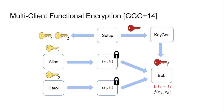A notion that prevents this leakage is multi-client functional encryption. In multi-client functional encryption, Alice and Carol use encryption labels for every ciphertext they generate. This allows Bob to only obtain a valid decryption for two ciphertexts generated under the same label; otherwise he learns nothing. This prevents the previously mentioned cross-label computations since Bob cannot compute f(x1, x2') or f(x1', x2) if the corresponding ciphertexts were generated using different encryption labels.